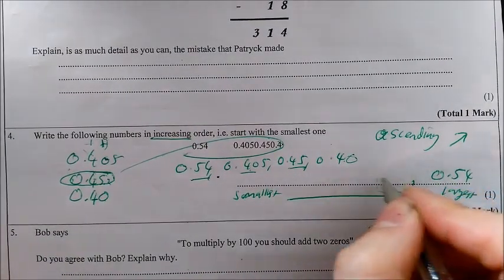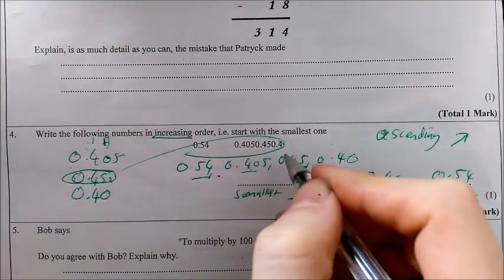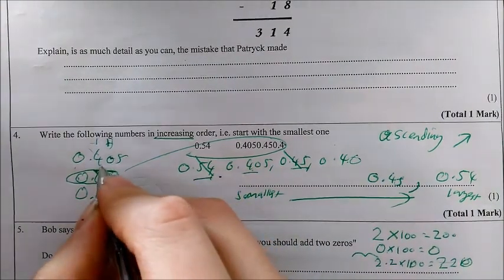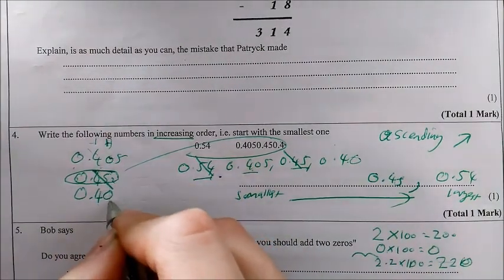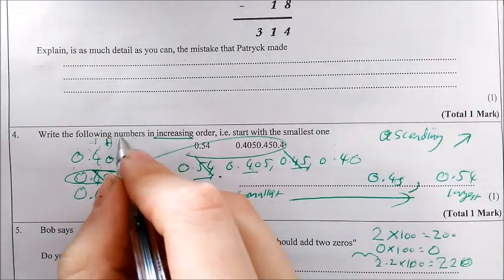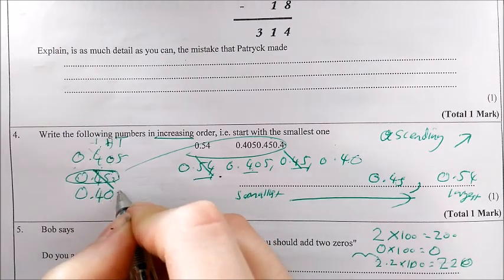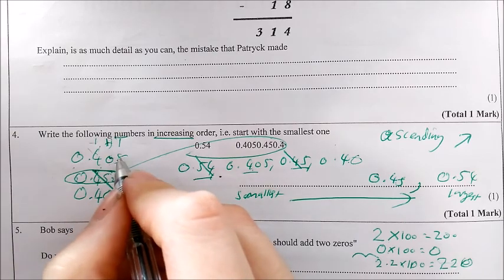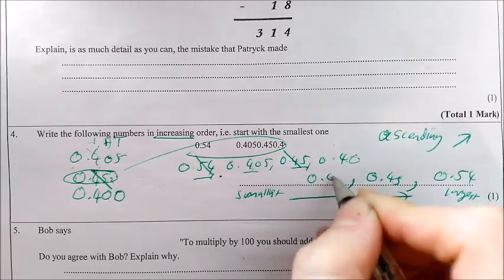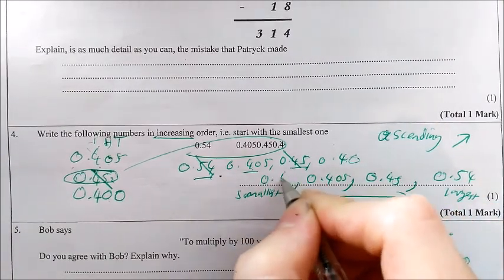So then, the next largest is going to be 0.45. As I do this, I'm going to cross off just to make sure I've checked them all. So, then I've got 0.405 and 0.40. Well, they've got the same in the tenths column, the same in the hundredths. So I need to go to the thousandths column. In this case, this has got five. This has got nothing. So the 405 is bigger and 0.4 is the smallest.